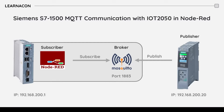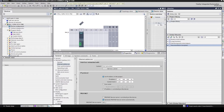In this example, my CPU is at IP address ending in .20 and my IoT 2050 is at IP address ending in .1. Mosquitto is accessible from port 1883. I've created a project in TIA Portal with one CPU 1513, set at IP address 200.20 and no program.